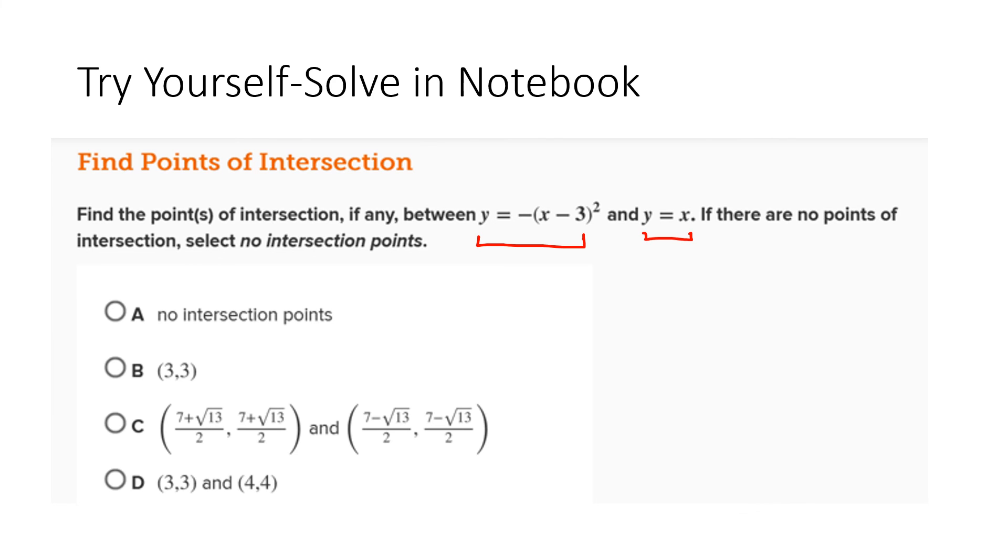Now we read the instruction: if there are no points of intersection, select no intersection points. So that can also be the case where the two graphs—the parabola and the line—do not meet at all. They do not intersect. In that case, you will mark A as the answer. If you do the graph on Desmos, within seconds you'll get to know that the two curves are not meeting at all. So the answer is A.